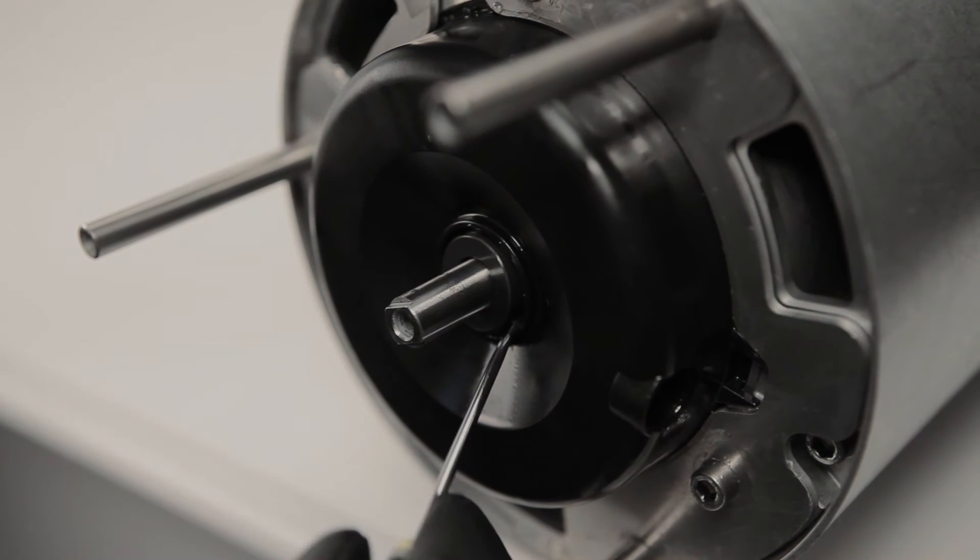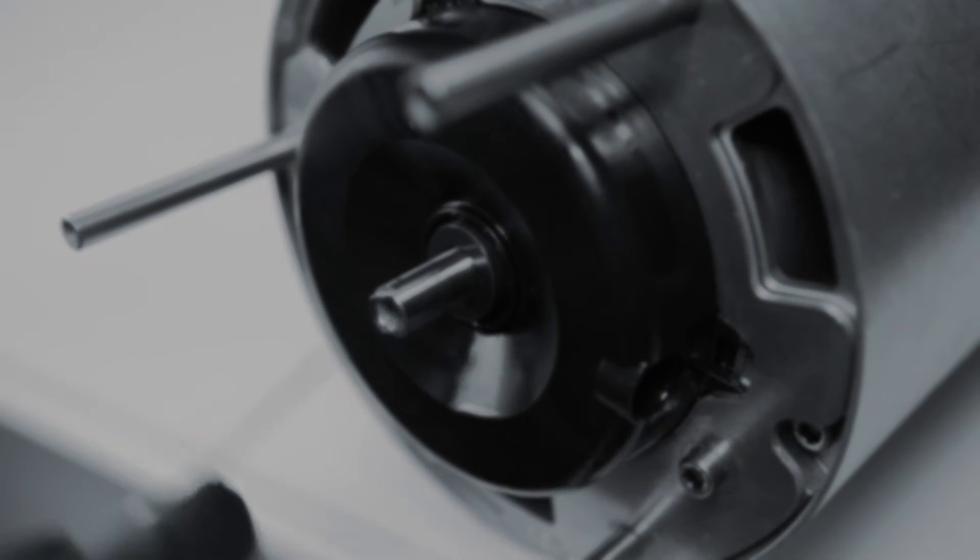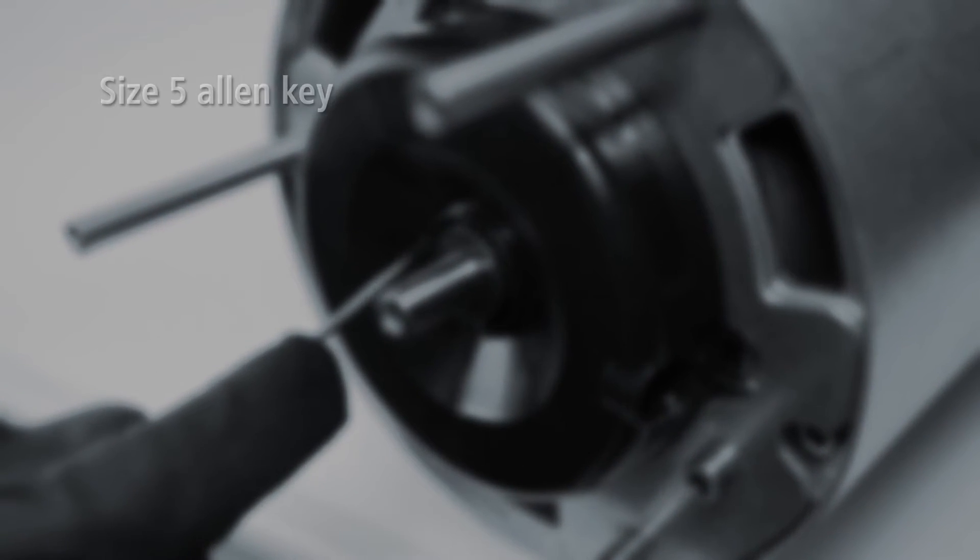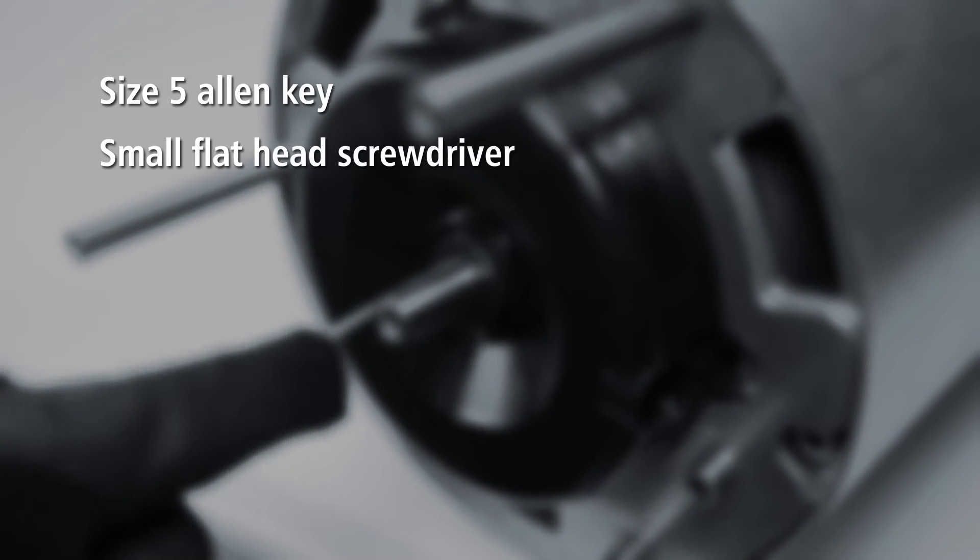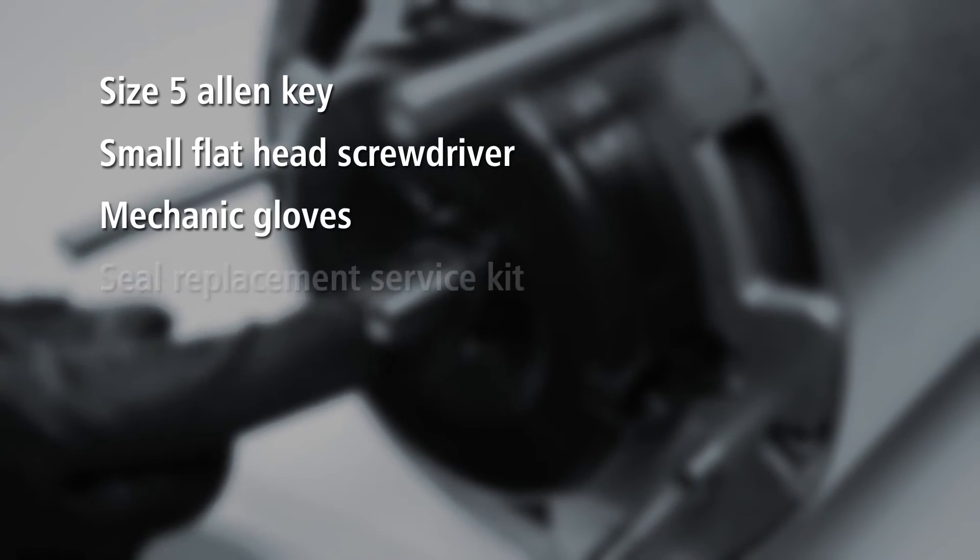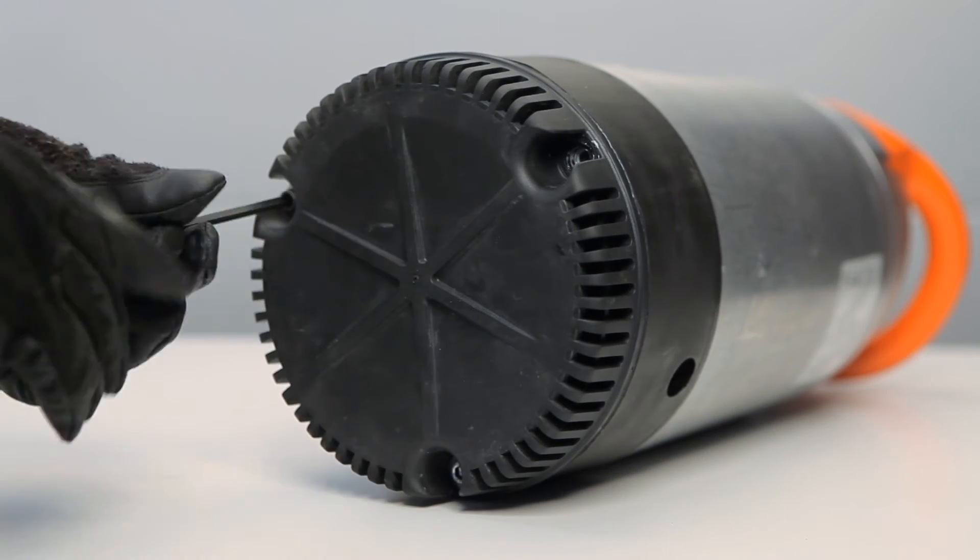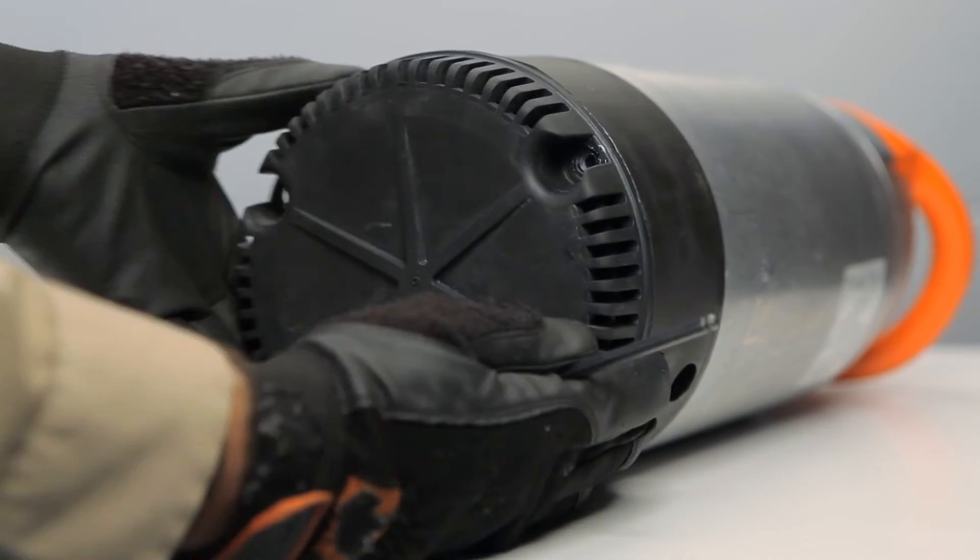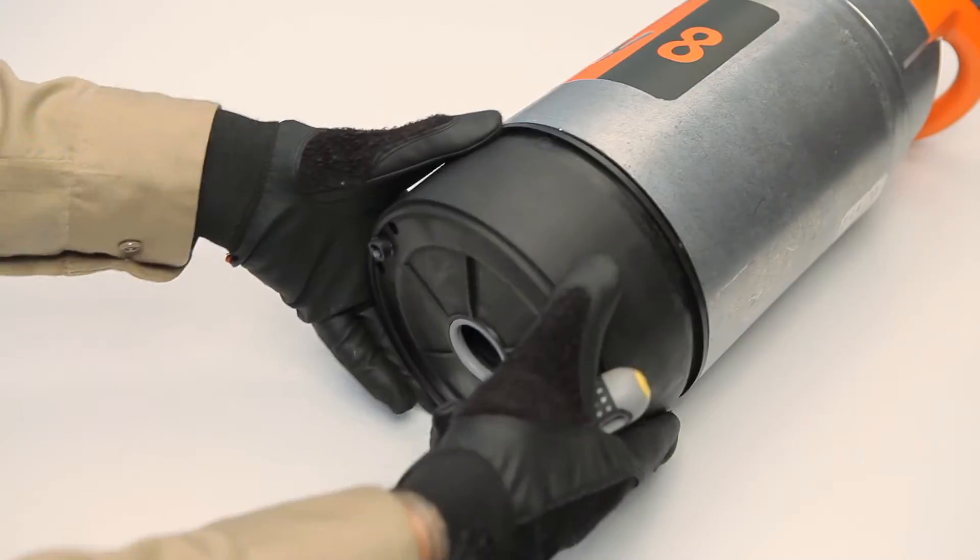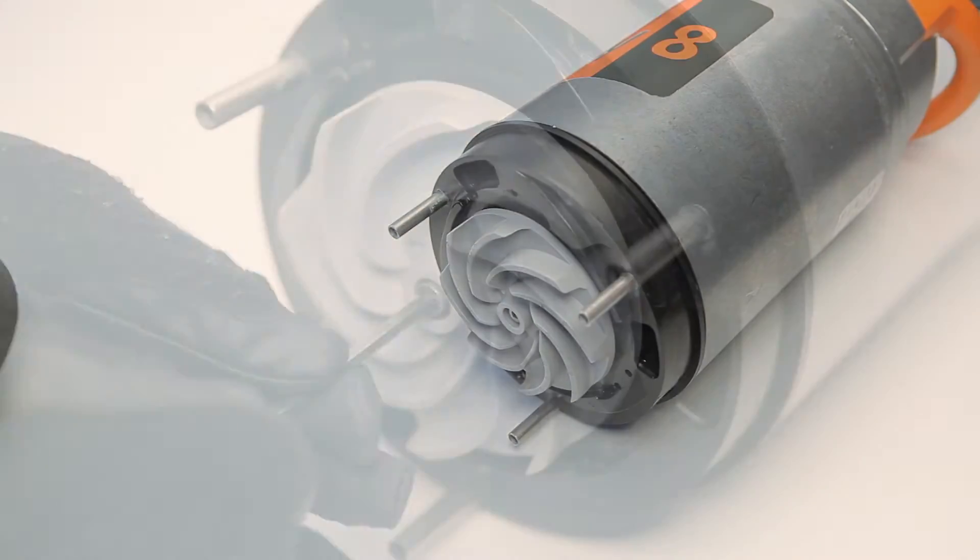Seals can become worn and cause unplanned downtime. To replace the seals, you'll need a size 5 Allen key, a small flathead screwdriver, a pair of mechanic gloves, and a seal replacement service kit. Remove the 3 strainer bolts on the base of the pump. Then, the strainer, lower diffuser, and the impeller.